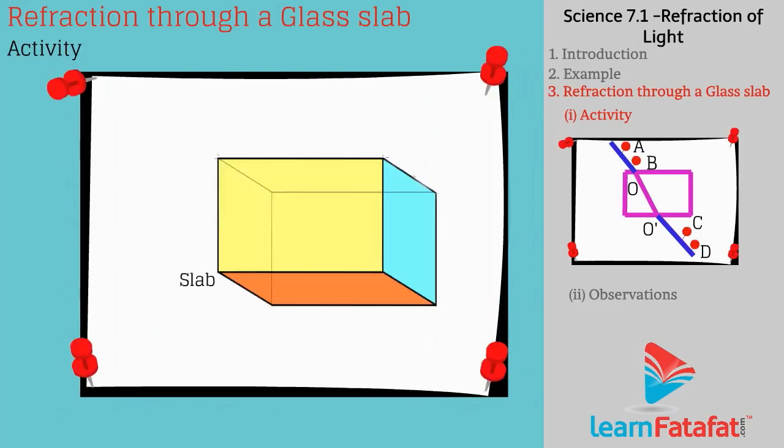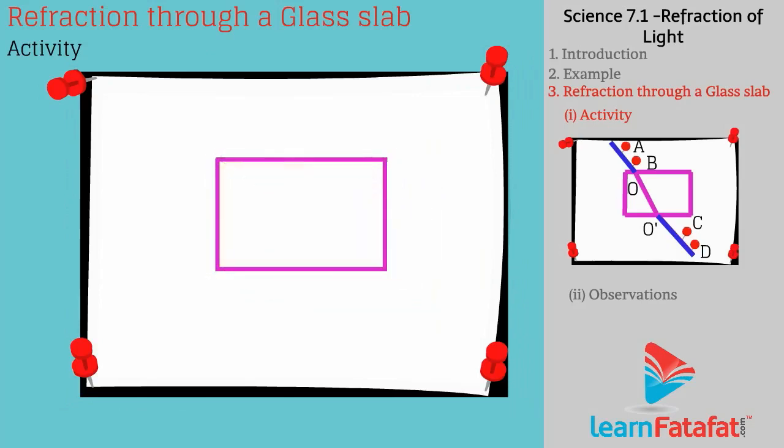Place a rectangular glass slab in middle of the paper. Mark the outline of the glass slab. Take four identical pins. Fix two pins A and B on a paper such that line joining them is not perpendicular to glass slab.